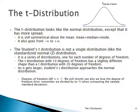Let's talk about the t-distribution. It looks exactly like the normal distribution, except it has more spread. The mean, median, and mode are the same. It's symmetric. It goes from minus infinity to plus infinity.